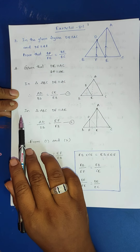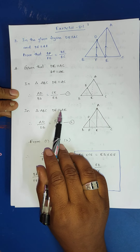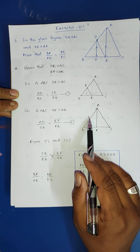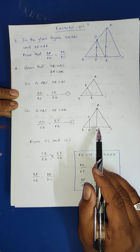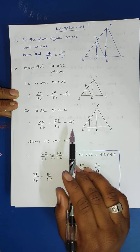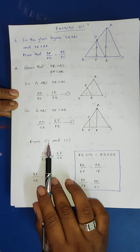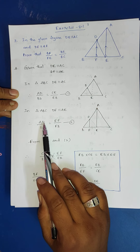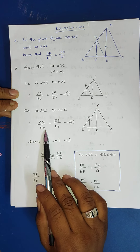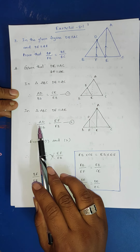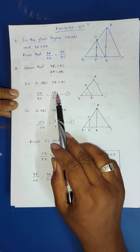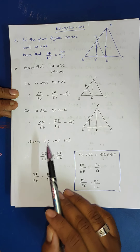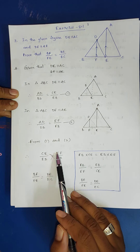In the same way, in triangle ABE, DF is parallel to AE. Using the basic proportionality theorem: AD by DB is equal to EF by EF·B. This is the second result. From first and second, the left-hand sides are both AD by BD — they are the same. So the right-hand sides must also be equal: CE by EB equals EF by EF·B.